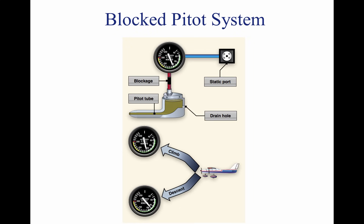If both the pitot tube opening and the drain hole should become clogged simultaneously, then the pressure in the pitot tube is trapped. No change is noted on the airspeed indication should the airspeed increase or decrease. If the static port is unblocked and the aircraft should change altitude, then a change is noted on the ASI. The change is not related to a change in airspeed, but a change in static pressure, because airspeed indications rely upon both static and dynamic pressure together.